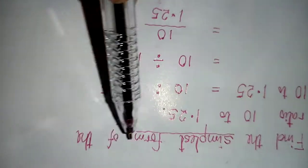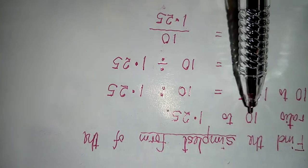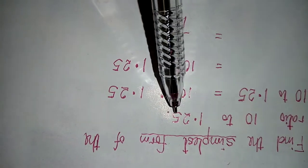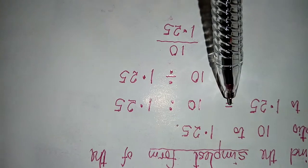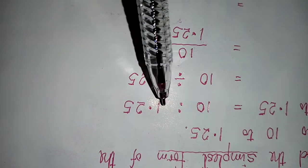Find the simplest form of the ratio 10 to 1.25. Now to do that, you write 10 to 1.25 equals 10 ratio 1.25.